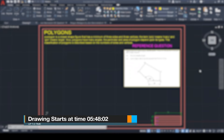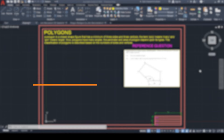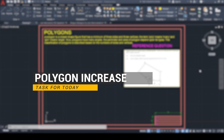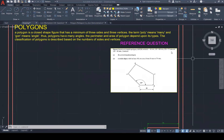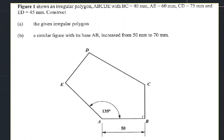Welcome back everyone to another presentation. Today we are going to be answering the CXC question. I'm going to read the CXC question first, and then give a brief definition of polygon. Figure 1 shows an irregular polygon ABCDE with BC equals 40mm, AE equals 60mm, CD equals 75mm, and ED equals 45mm. Construct the given irregular polygon — a similar figure with its base AB increased from 50mm to 70mm.